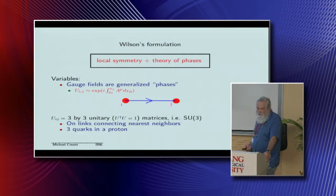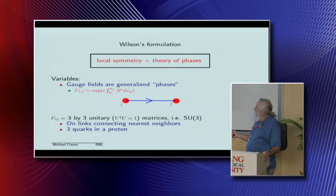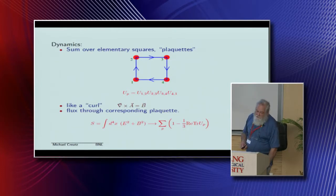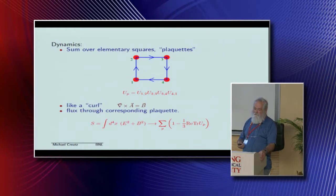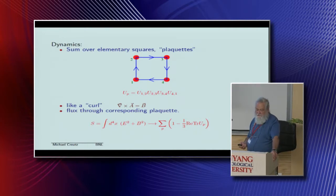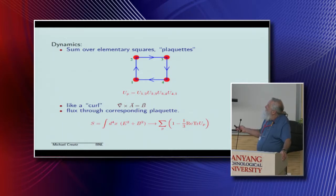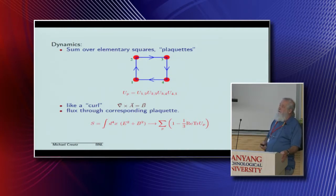This phase is related to the exponential of the integral of A_μ along that link. Now, for QCD, things are not ordinary phases — they're three-by-three unitary matrices, elements of SU(3). They're located on all the links connecting nearest neighbors in the lattice, and the three is associated with the fact that you've got three quarks in the proton. Wilson said an elegant way to formulate the dynamics is to look at plaquettes — elementary squares. If you multiply the links around an elementary square, this is very much like a curl; you're calculating the flux through that square.